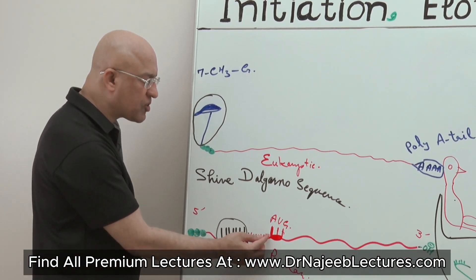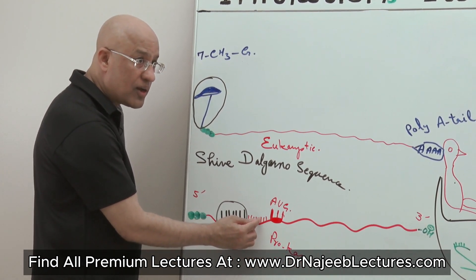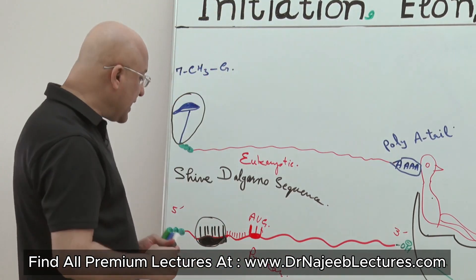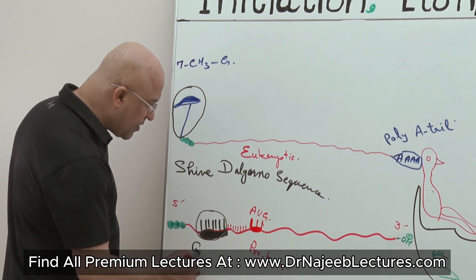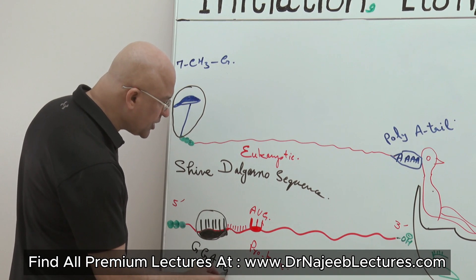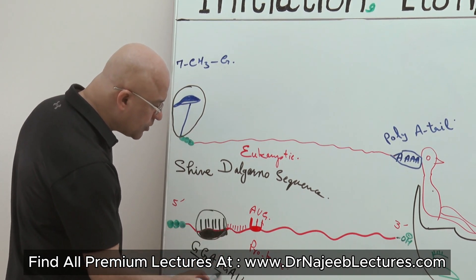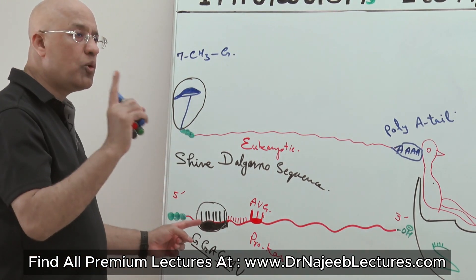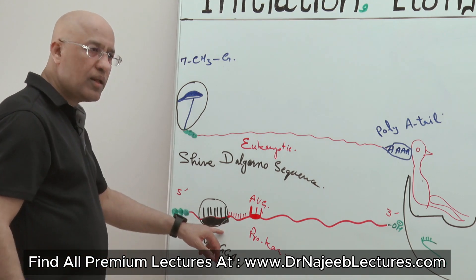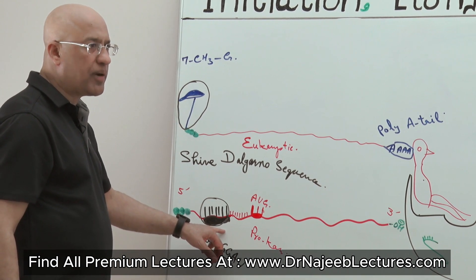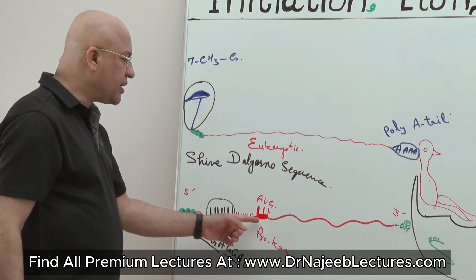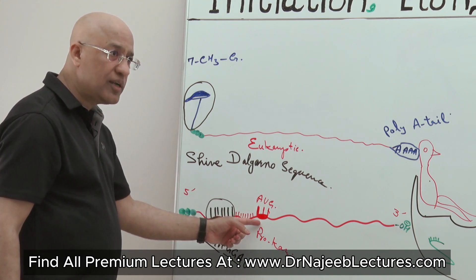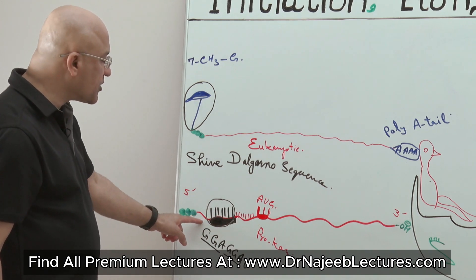The Shine-Dalgarno sequence is a very special nucleotide sequence present a few nucleotides upstream from the start codon, and this sequence is purine-rich, meaning it contains adenine and guanine — for example, depending upon the bacterium, it may be GGA. The Shine-Dalgarno sequence is present only and only in prokaryotic messenger RNAs and in mitochondrial messenger RNA, located 6 to 8 nucleotides upstream from the start codon, and it is purine-rich.